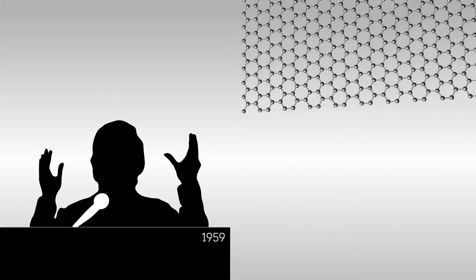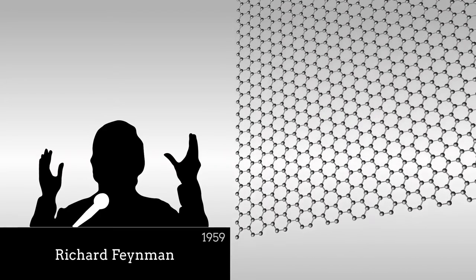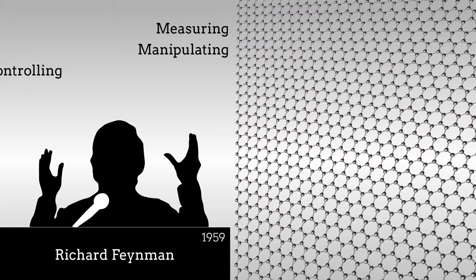In a famous 1959 speech considered to mark the birth of nanoscience and nanotechnology as fields of study, Richard Feynman charged scientists with the problem of measuring, manipulating, and controlling things on the atomic scale.